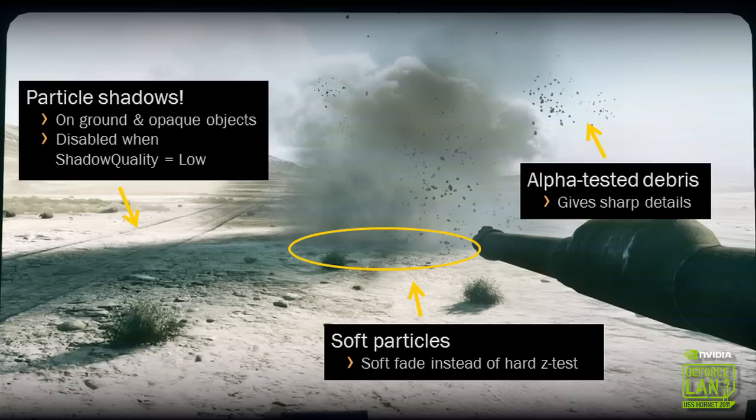We're also combining in some other particles that are alpha tested — they have hard edges but are smaller details that create noise. In a still picture the three clusters of alpha-tested debris look a bit odd, but in motion this looks really good in how it interacts with the environment, giving some sharp details to the effects.